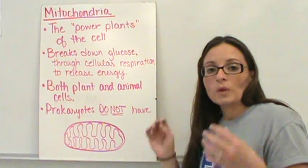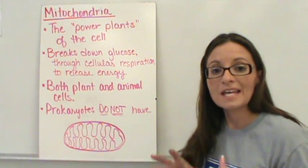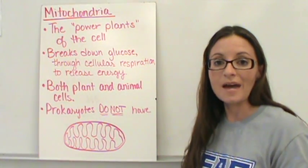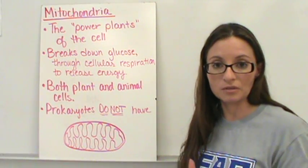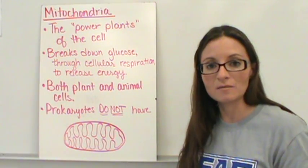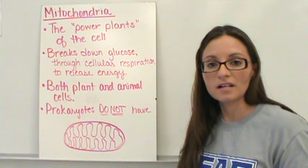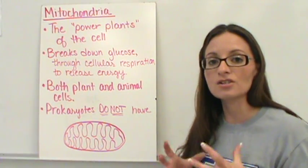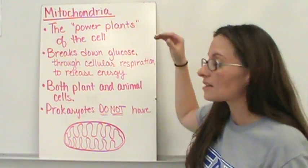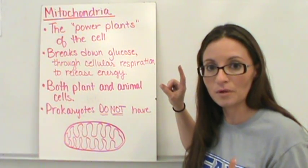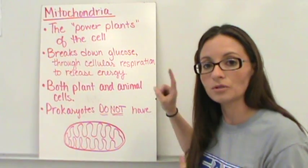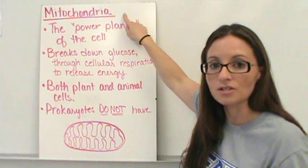Once that energy is stored in the glucose, every type of organism actually has to take that energy and release it from the glucose. So plants, animals, fungi, all of these organisms actually have to go through cellular respiration. So every type of organism except prokaryotes, so all eukaryotes actually have a mitochondria.